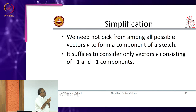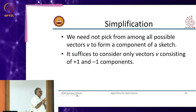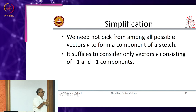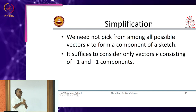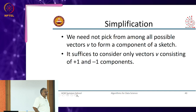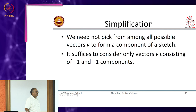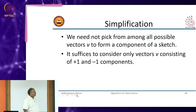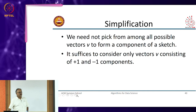For L2 and L1 we do have LSH hash families — L2 is not too complicated, just that the analysis is painful. For L-infinity I am not sure whether hash families exist. All the metrics we talked about today are non-Euclidean.